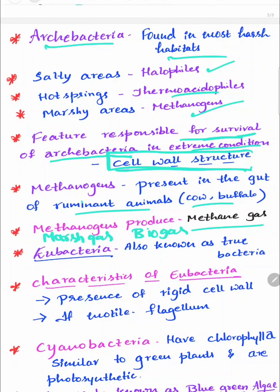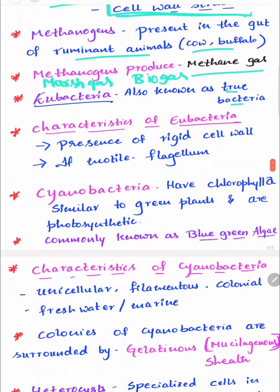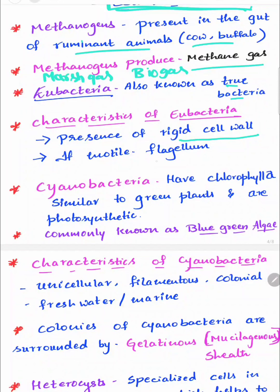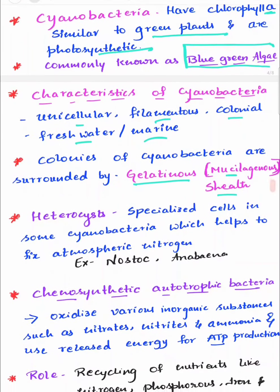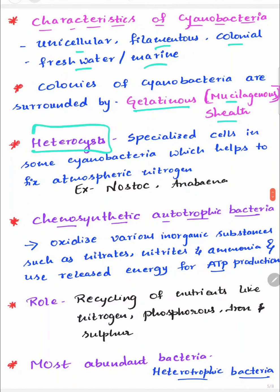Eubacteria are also known as true bacteria. Characteristics of eubacteria include the presence of a rigid cell wall, and if motile they possess a flagellum. Cyanobacteria have chlorophyll A, similar to green plants, and are photosynthetic — commonly known as blue-green algae. They are unicellular, filamentous, or colonial, found in freshwater or marine environments. Colonies are surrounded by a gelatinous or mucilaginous sheath. They have specialized cells called heterocysts that fix atmospheric nitrogen. Examples are Nostoc and Anabaena.